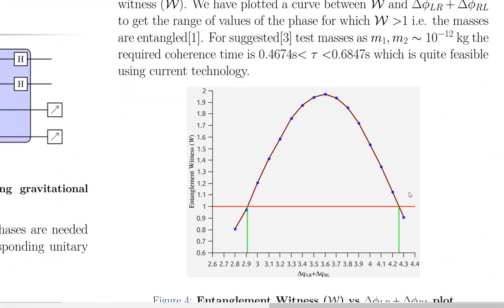There is an entanglement witness between the masses and the spin as well as the masses. But if it is less than one, that would mean that there isn't. In this range, we can see that it is greater than one. If we take the proposal and take the gravitational masses to be 10^-12 kg, then we get coherence time of 0.46 to 0.68 seconds.